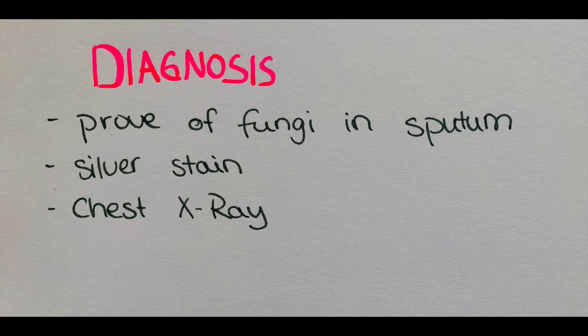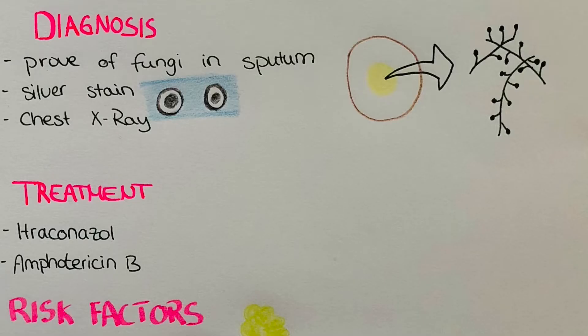Diagnosis of infection with this fungi is made by culturing the fungi in sputum. As you can see here in this scheme of a petri dish, it forms white-yellowish cultures in which these fungal spores, which I tried to draw next to them, are contained. Also it is possible to stain the fungi in a histological slide with a silver stain, where the background will appear bluish and the fungi show in black, with a thick capsule, which is characteristic for this fungi.